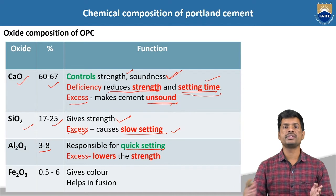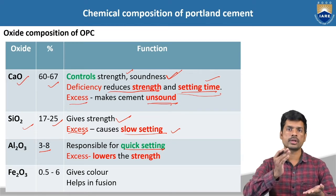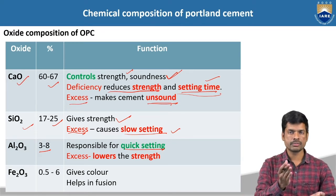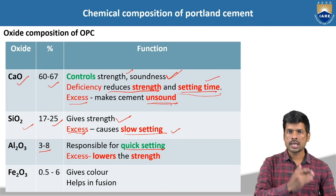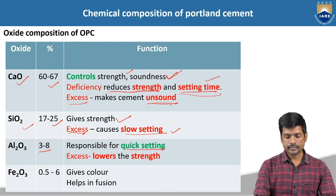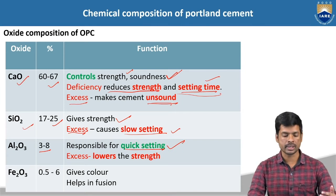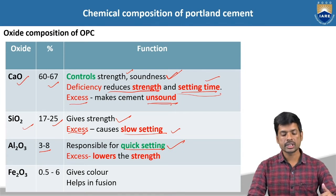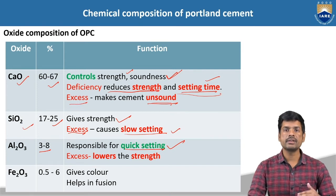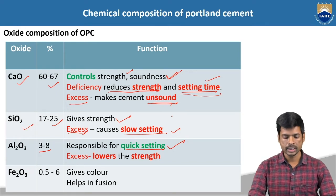Quick setting means after adding water, within less time, it is going to convert from plastic state to hardened state. Depending upon the type of cement, depending upon the chemical composition — that means this particular aluminum trioxide — the setting time will be different. About these properties, we can discuss in the following classes clearly.